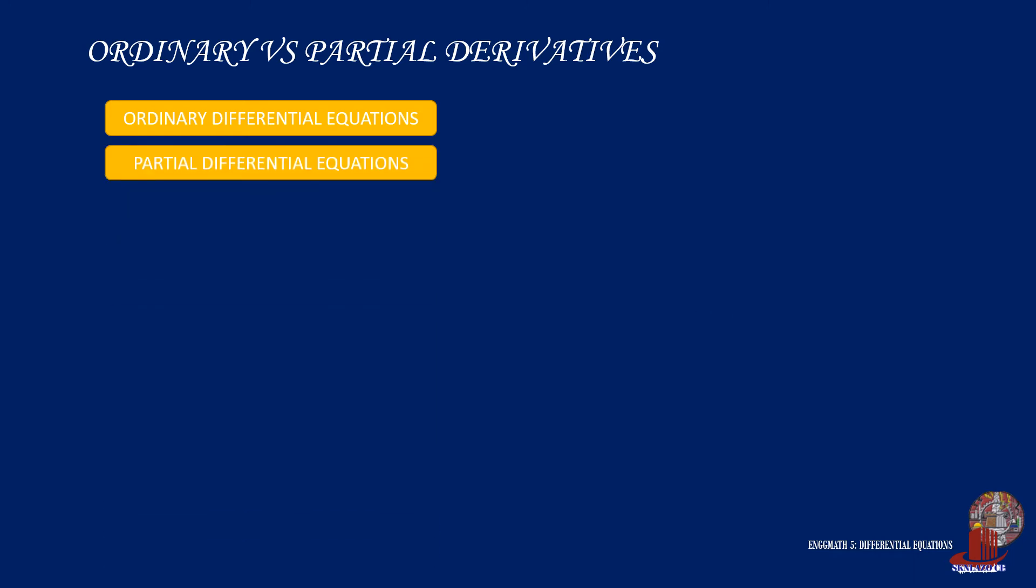How about for partial differential equations or PDE? In case we have the following equation, the first term is read as the second partial derivative of v with respect to x, and the second term is the second partial derivative of v with respect to y. As how we defined ODE earlier, we can note that there are two independent variables in the equation and they are x and y, and this signifies a partial DE.